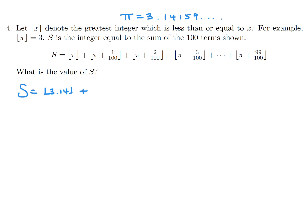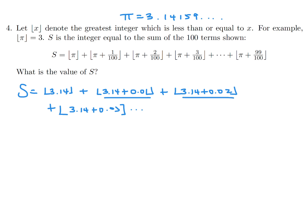So we have ⌊3.14 + 0.01⌋, then ⌊3.14 + 0.02⌋, then ⌊3.14 + 0.03⌋, and so on. The key is figuring out when the number inside the bracket reaches 4, because if it's less than 4, the floor value is just 3.